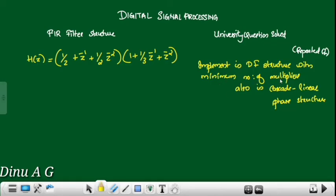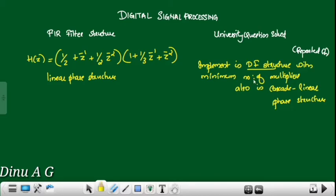The minimum number of multiplier structure is the linear phase structure. We will implement the direct form structure with the linear phase structure.